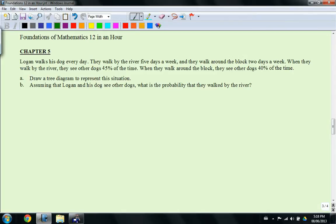So this question looks a lot like the one that we did in class, but what I changed was the one that we did in class was about the probability that Logan and his dog will see other dogs. But this time you can notice part B, it says, assuming that Logan and his dog will see other dogs, what's the probability that they walk by the river? So that's a different question and involves using conditional probability in a different way that we did in class.